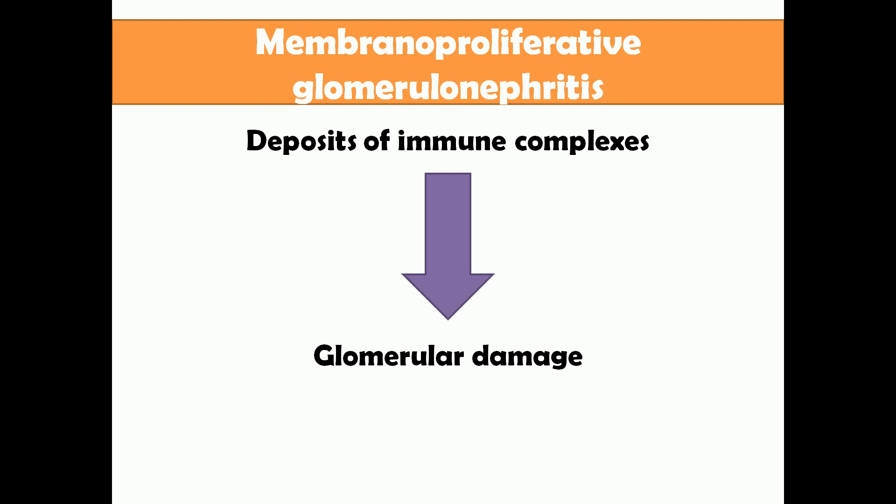In membranoproliferative glomerulonephritis, there are deposits of immune complexes in the glomeruli in the kidney. These deposits of immune complexes will lead to glomerulonephritis. That's a simple overview — we'll go through everything in detail in the upcoming slides.